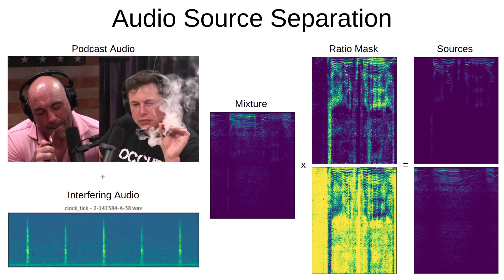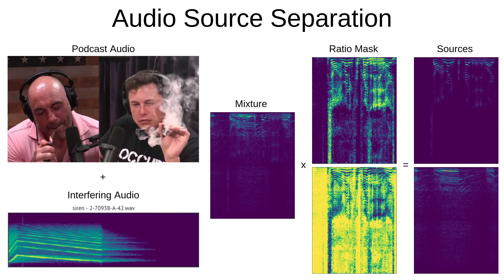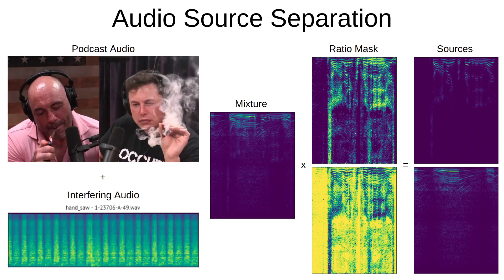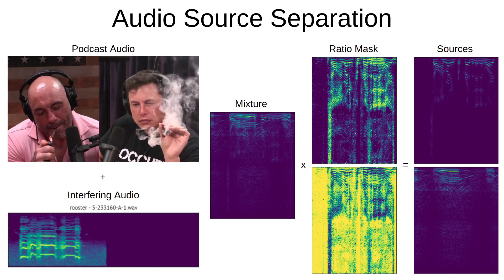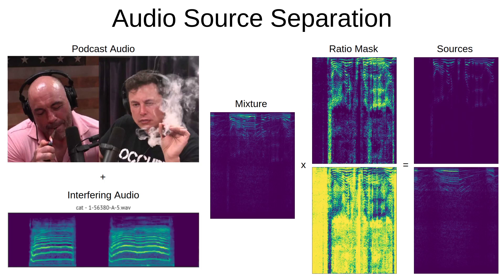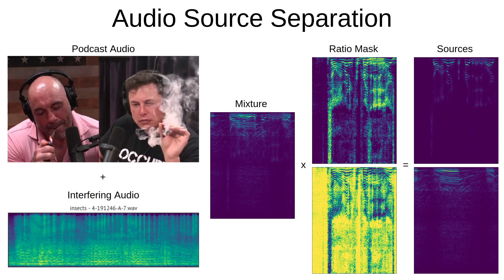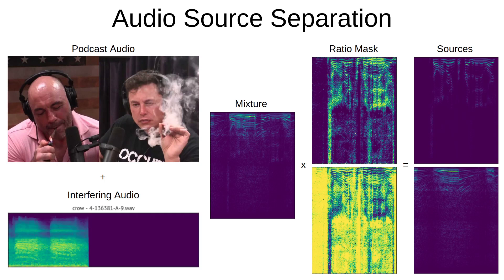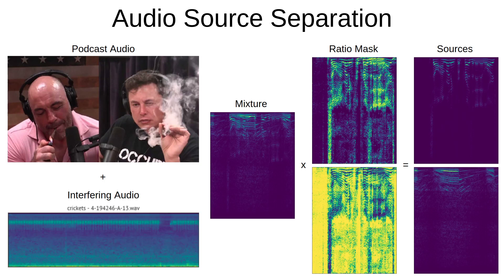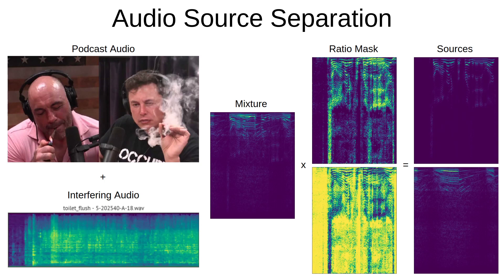The problem itself actually goes back to digital signal processing, to a problem called the cocktail party problem. Essentially, you're at a party trying to have a conversation with someone, but it's very difficult to hear them because there's lots of interfering audio, like music going on in the background. So could we feed a mixture of audio to a neural network and actually supervise it such that it can recover the audio signal of interest?